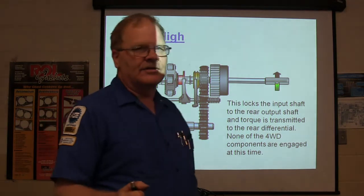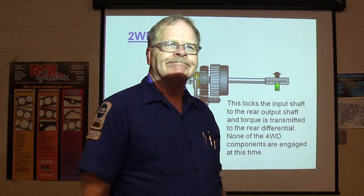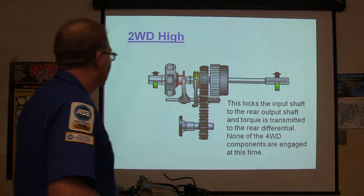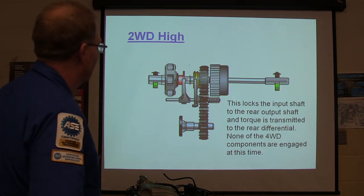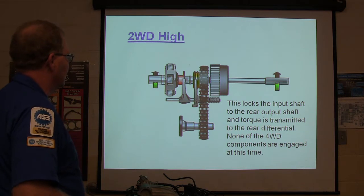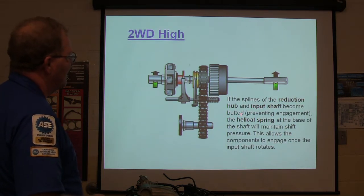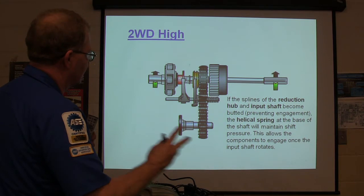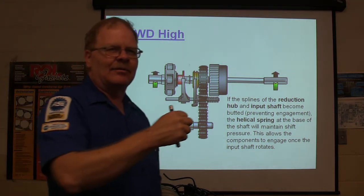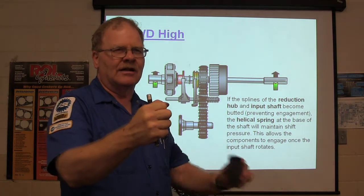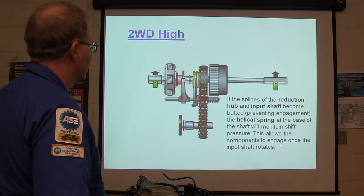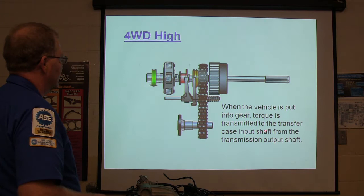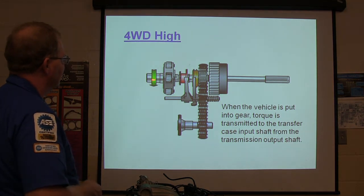On four-wheel drive vehicles, some of them you can put it in neutral so the drive shaft is not driving the transmission — it's just going to be free in there. Two-wheel high basically takes it out of neutral and puts it in two-wheel high. The four-wheel drive components are engaged at this time. The helical spring at the base of the shaft will maintain shift pressure so it snaps in as soon as it lines up — kind of like putting a manual transmission in reverse, where it won't go in until you let off the clutch and then drops into place.